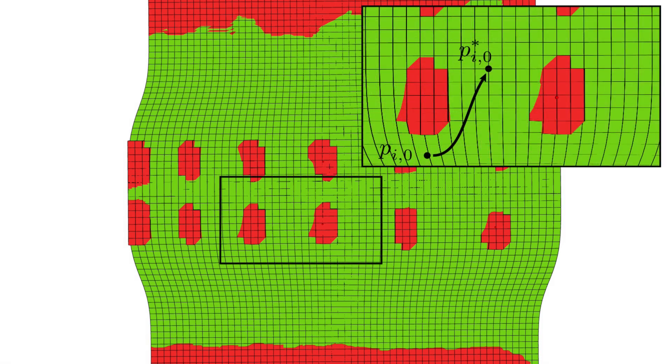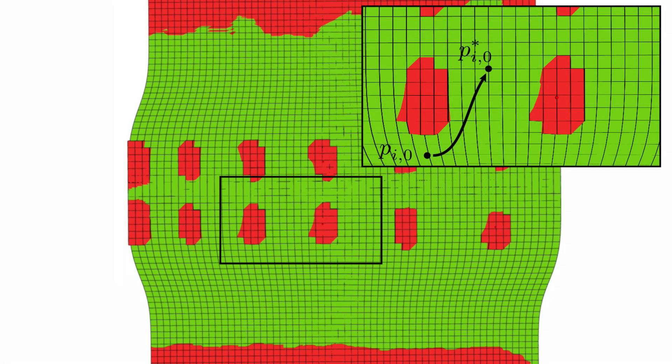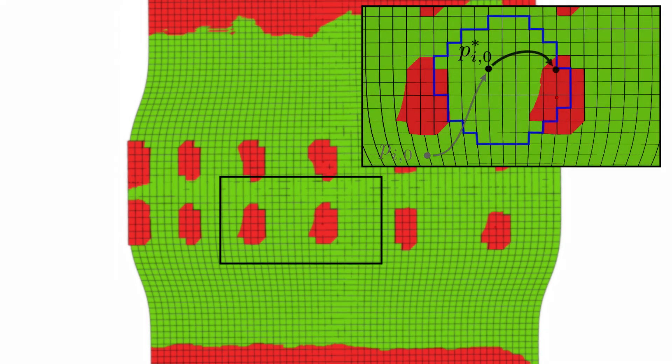In the first stage, the motion is optimized over the virtual floor. Then, each foothold location is refined in its close neighborhood. This second stage biases the footholds towards elevated parts and away from gaps.